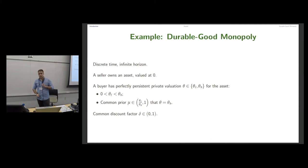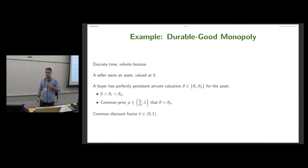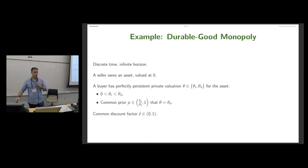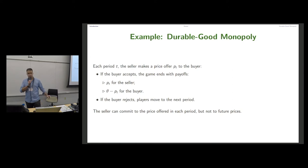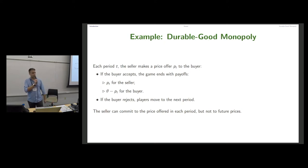Let me begin with a classic example of mechanism design with limited commitment: durable good monopoly. Time is discrete, the horizon is infinite. There is a seller who owns an asset valued at zero, and the buyer has a valuation theta which can be high or low. The low valuation is strictly positive. There is a non-trivial common prior and players share a common discount factor delta. Each period t the seller makes a price offer p to the buyer. The buyer can accept or reject; if the buyer accepts, the game ends with payoffs p_t for the seller and valuation minus price for the buyer.